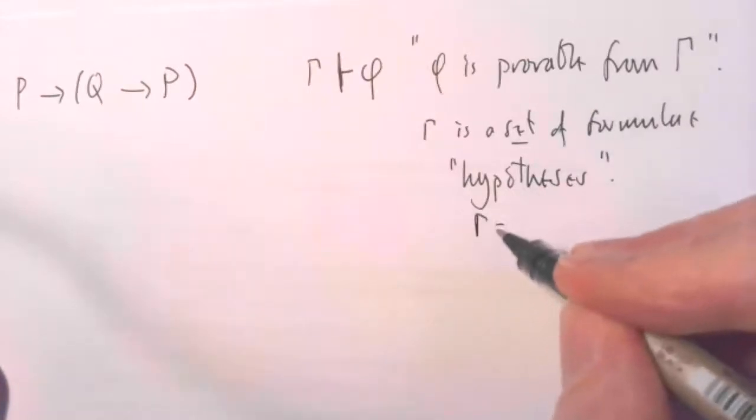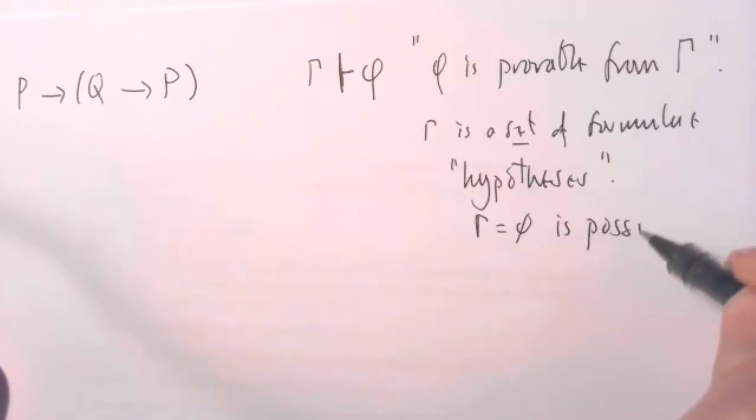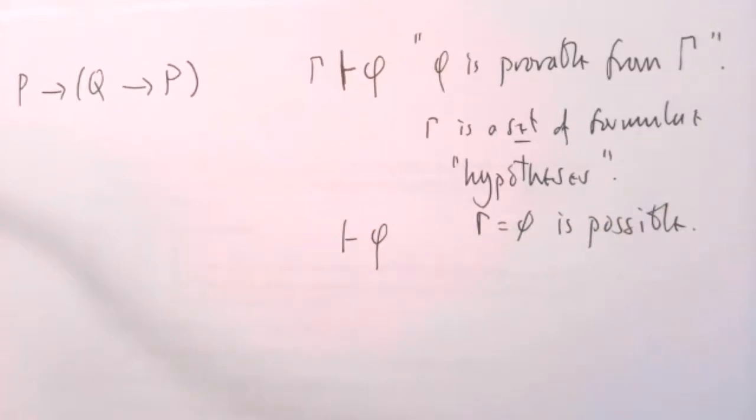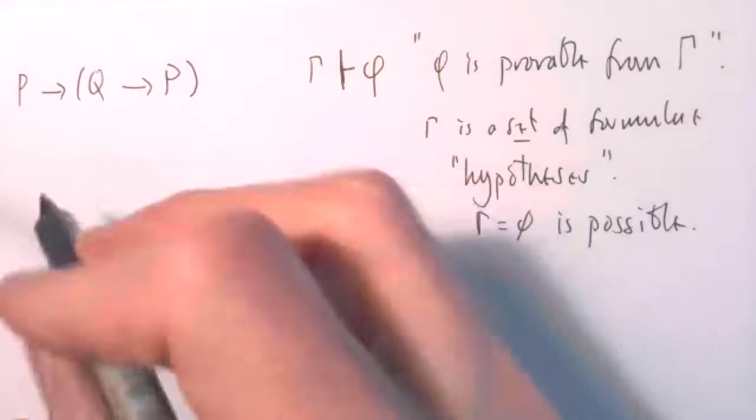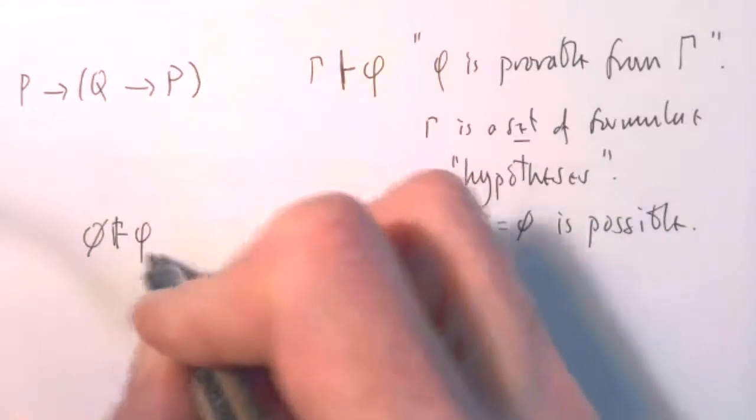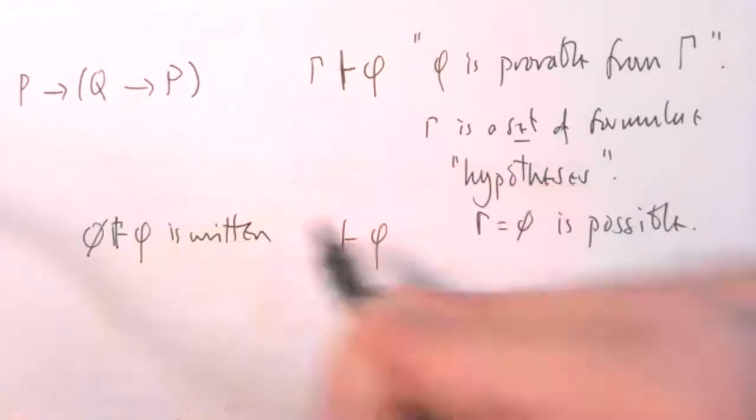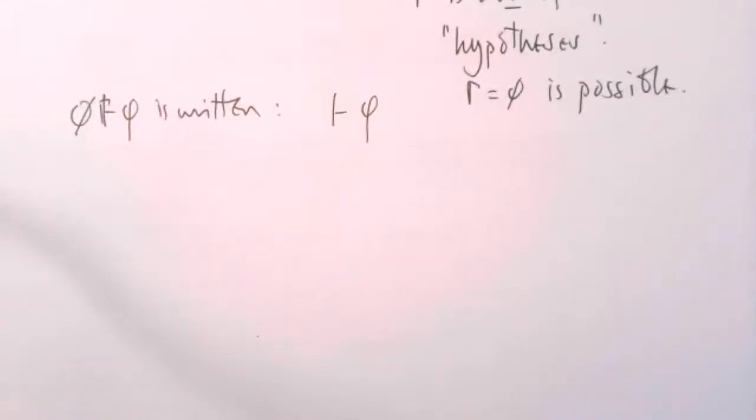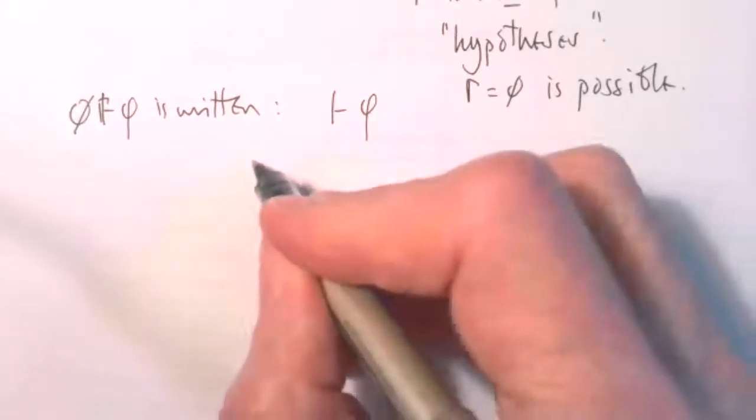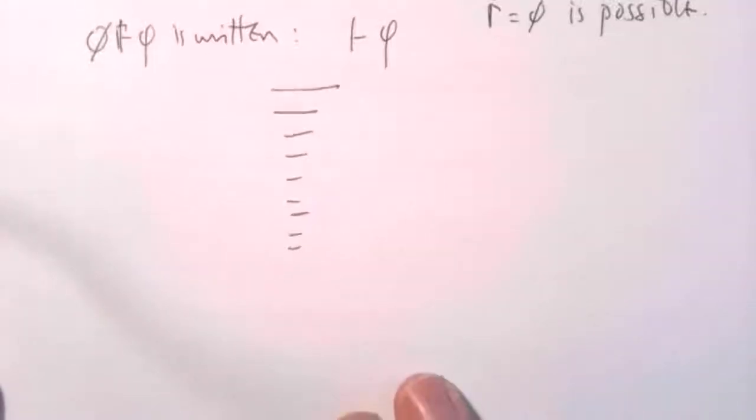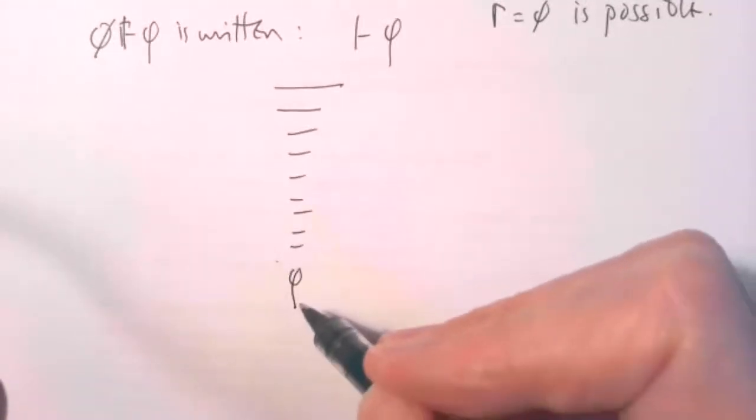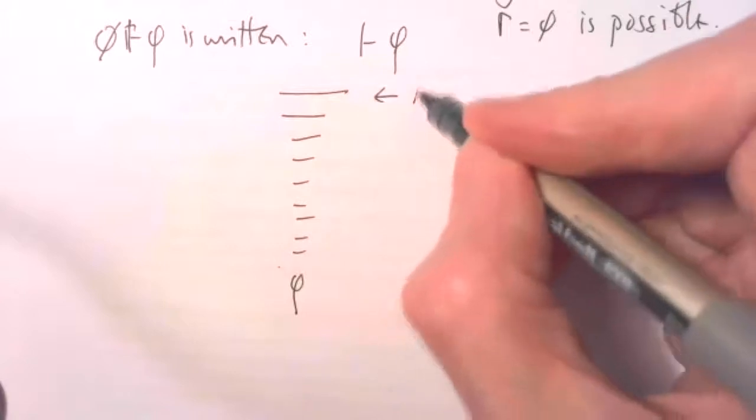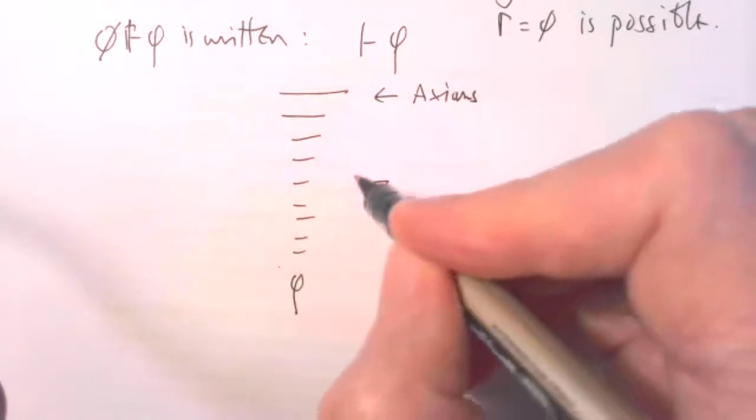It might be empty. In which case, if it's empty, we write this: empty set phi is written like this. So a proof will be a finite number of lines. The thing at the bottom, the theorem if you like, what's being proven is phi. What can occur here are axioms or hypotheses from gamma.